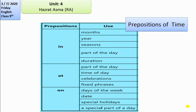We use 'in' as a preposition of time for months — for example, 'in June,' 'in October.' We also use 'in' for years — for example, 'in 2017,' 'in 1999.' We use 'in' for seasons — for example, 'in winter,' 'in summer.' When we talk about parts of the day, we say 'in the morning,' 'in the afternoon,' 'in the evening.'